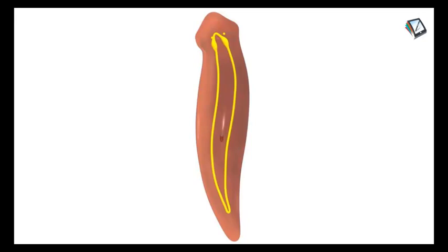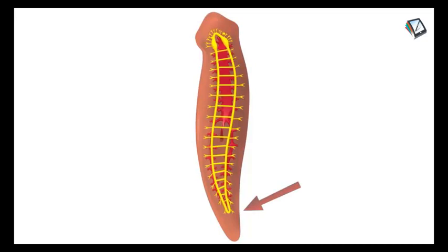These two are longitudinal nerve cords, and these two are connected to each other by transverse commissures. Thus, it gives appearance of a ladder. That is why the nervous system in the case of flatworms is a ladder-like nervous system.